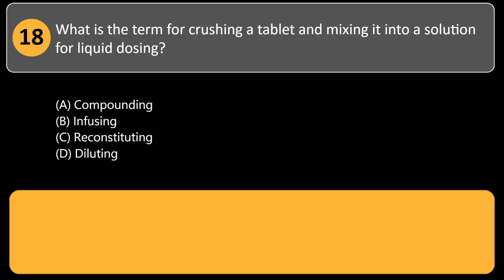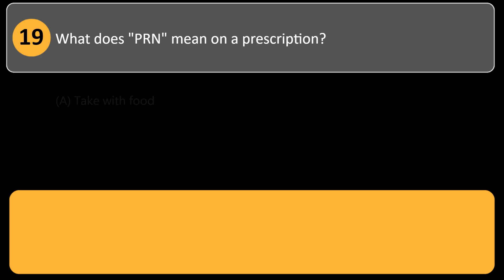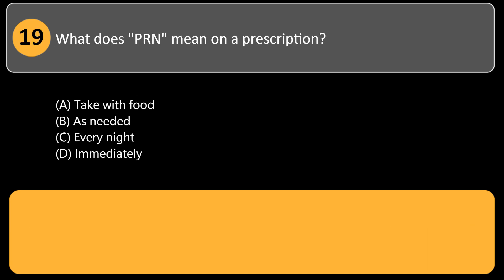What is the term for crushing a tablet and mixing it into a solution for liquid dosing? A) compounding, B) infusing, C) reconstituting, D) diluting. Answer: A. Compounding includes preparing medications in forms not commercially available, such as liquids from tablets.